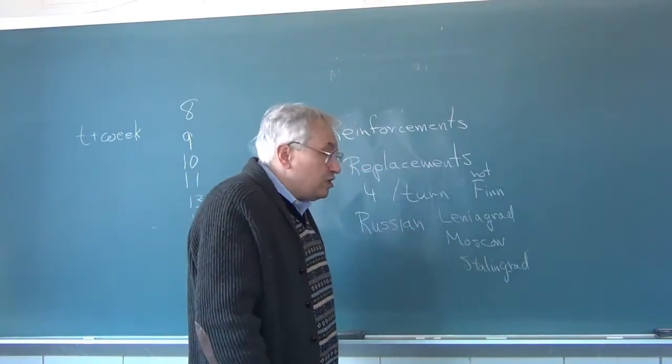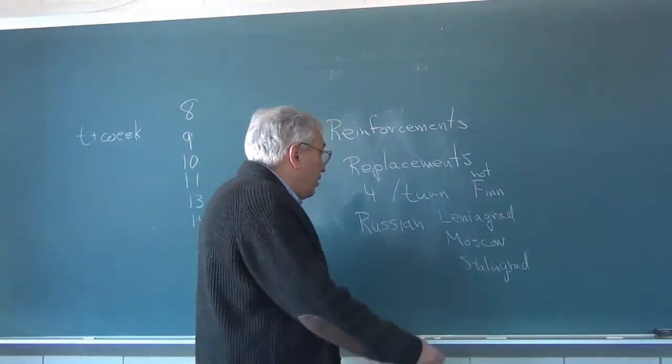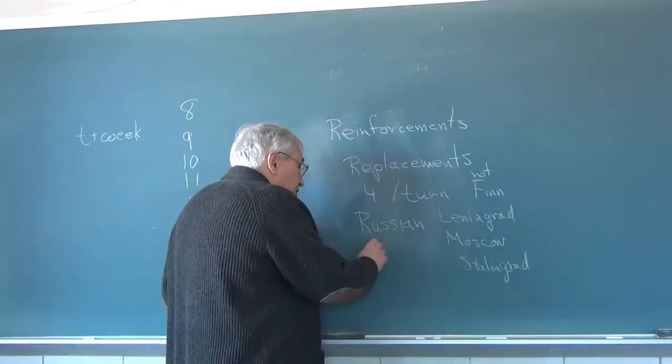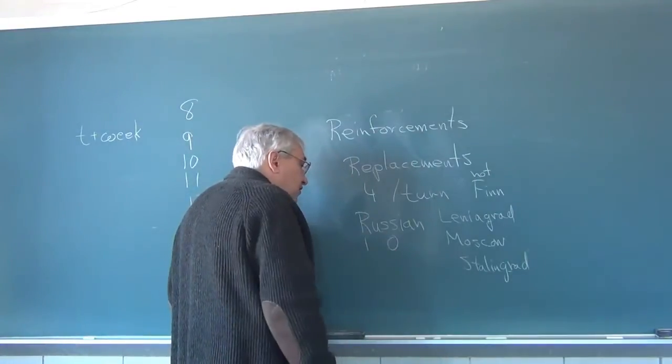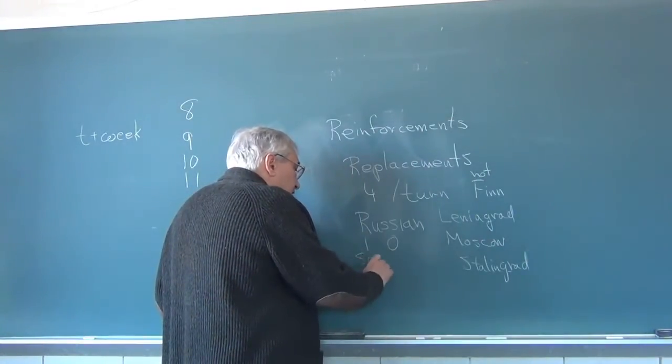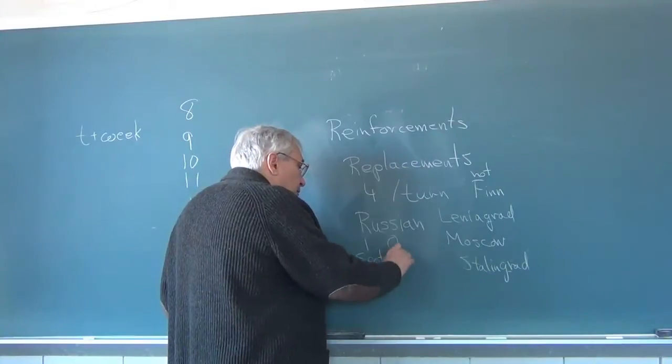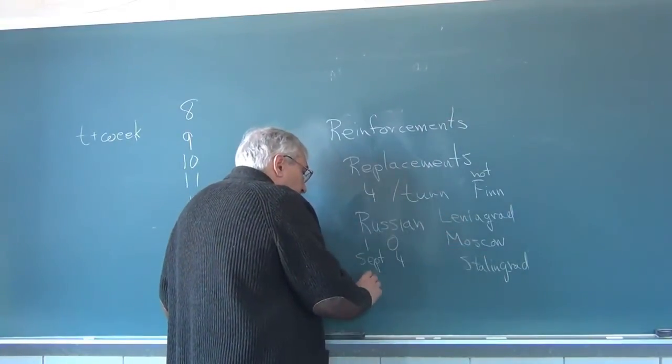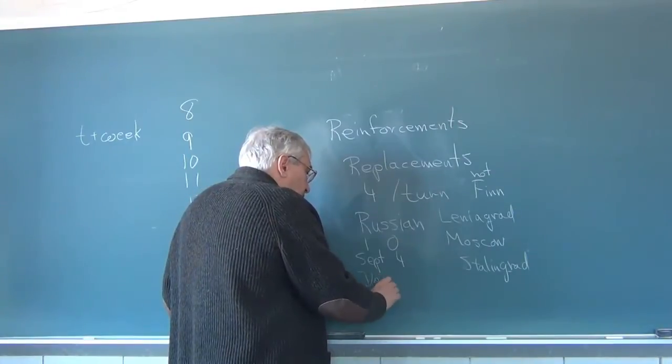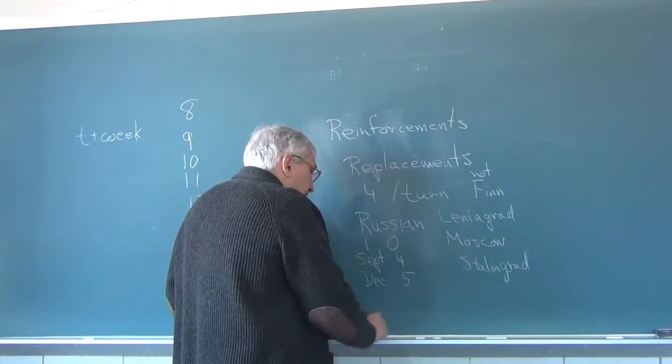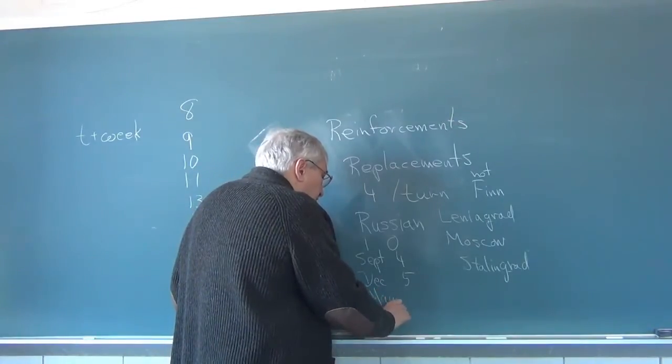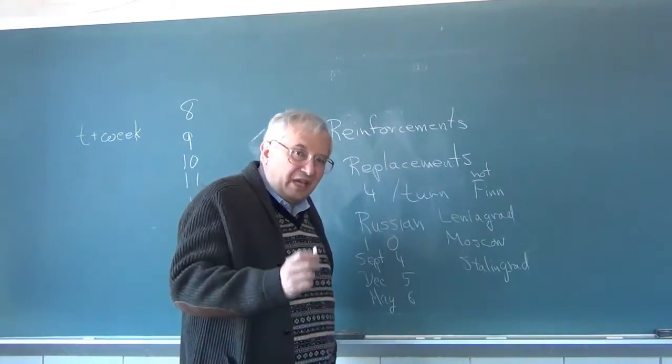Each of these cities produces replacement factors for the Russian army. And the replacement rate depends on the turn. At the start, on turn one, the replacement rate is zero. In September of 1941, the replacement rate goes to four per city. In December, the replacement rate goes to five. And if you push on until May 1942, the replacement rate goes to six.